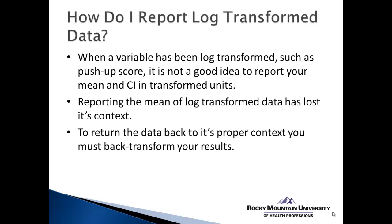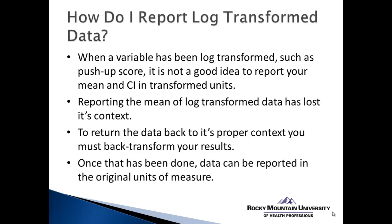In order to return the data back to its proper context, even after it's been log transformed to a more normal distribution — so now it will have a new mean and a new variance — we need to do a technique called back transformation. This transforms the results from the log transformation back to its normal raw units, and then we can report means and confidence intervals in the original units of measure.